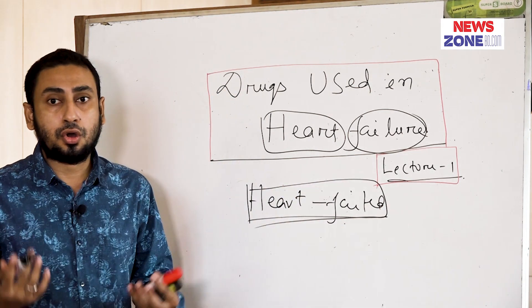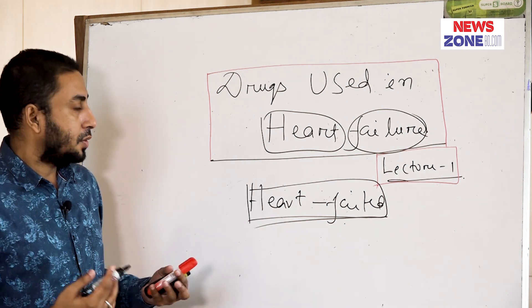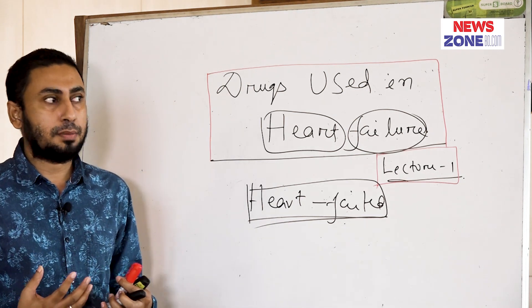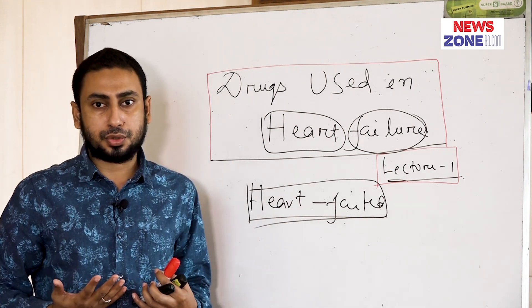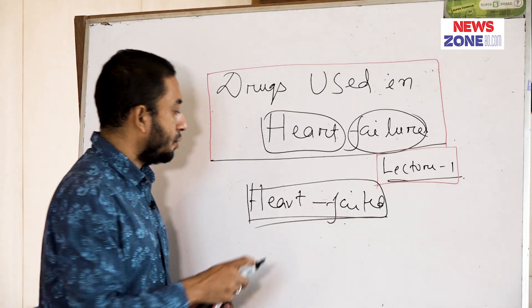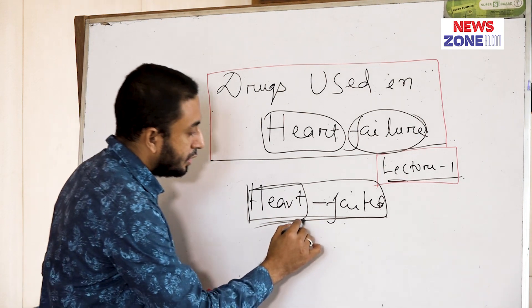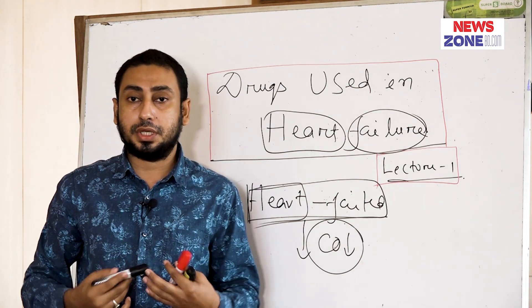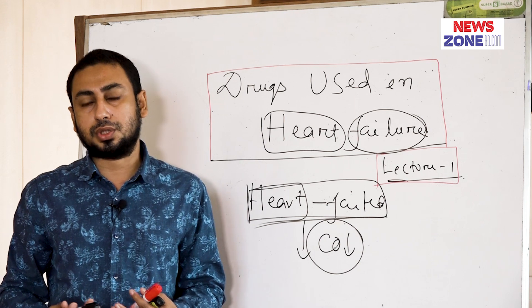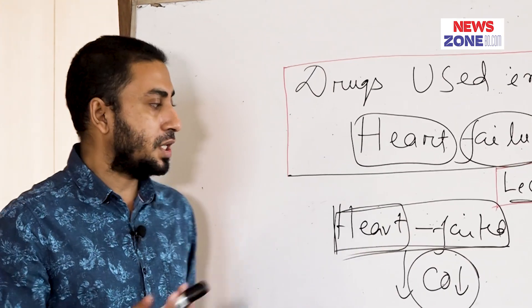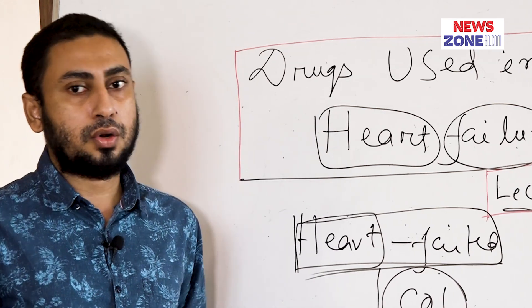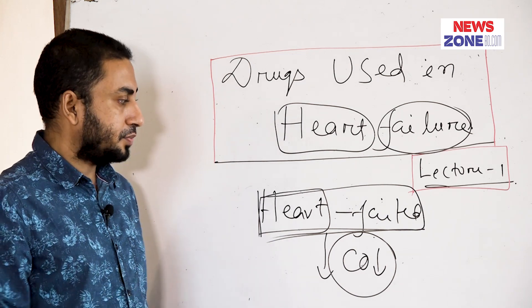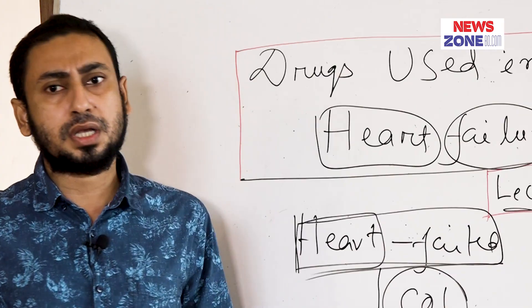When the heart is not functioning properly, what will happen? The heart is working 24 hours, pumping blood throughout the body and maintaining proper cardiac output. If there is failure of the heart, cardiac output will be decreased. Initially there will be a compensatory mechanism, but later on it is not possible to compensate, and various symptoms will be produced.